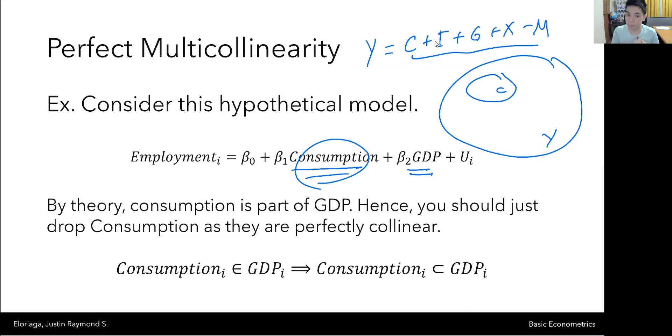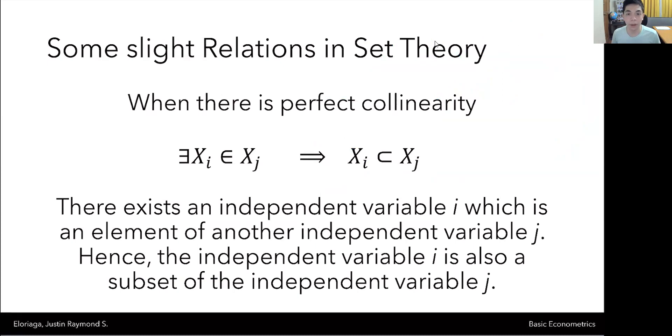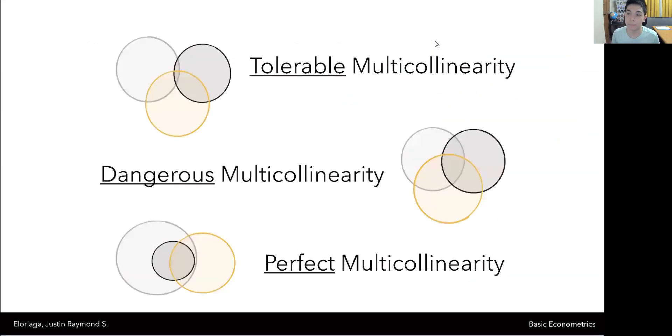Hence, theoretically, you should just drop consumption as they are perfectly collinear. What will happen is it will omit. Typically, when you run this in a program, it will omit the variable that is inside another one. So since consumption is an element of the set of GDP or inside of GDP, then consumption is a mere subset of GDP. So when there is perfect collinearity, there exists some independent variable which is an element of another independent variable. Hence, the independent variable I is also a subset of the independent variable J. And I think the best way to see this is sort of graphically through a Venn diagram.